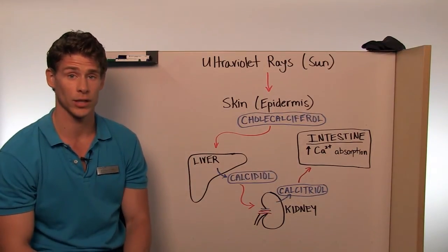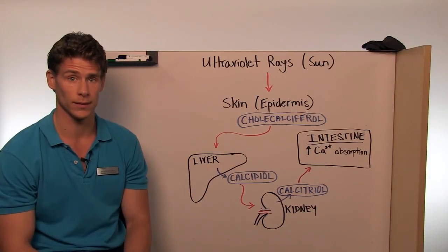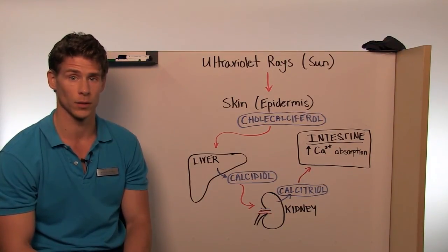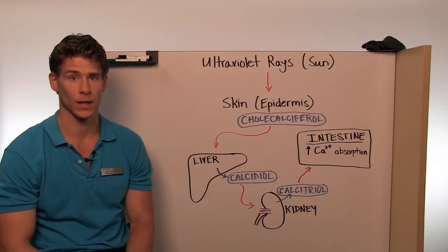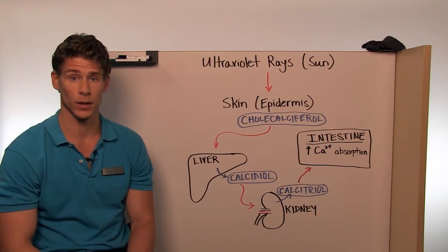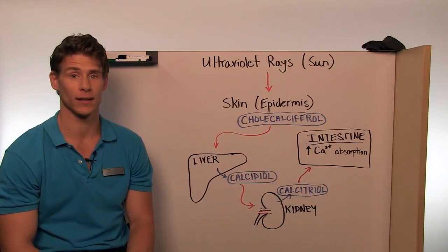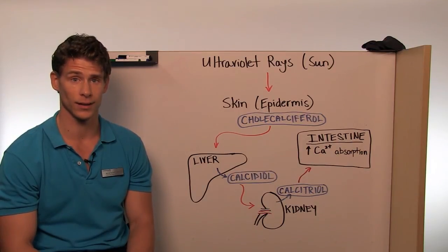If we do not have enough calcitriol production in the body, this can lead to impaired bone growth and maintenance. In children, rickets can develop when there is a lack of calcitriol. In adults, osteomalacia occurs — this is the softening of bones. These disorders have been prevented, however, in more recent years, as foods and beverages such as milk have become fortified with vitamin D3. Nonetheless, the integumentary system still plays a large role in maintaining normal calcium levels within the blood and therefore maintaining strong and healthy bones.